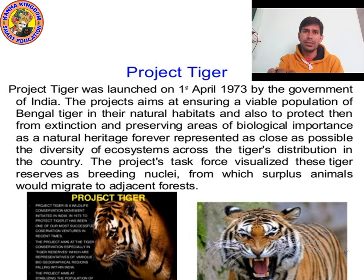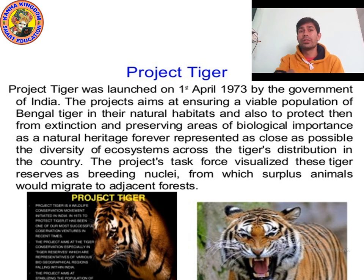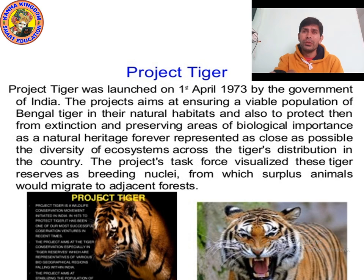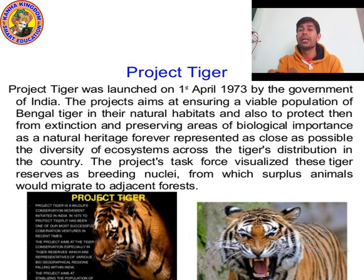We also studied about biosphere reserves. A biosphere reserve is a large area of protected land for conservation of biodiversity and the traditional life of tribals. Biodiversity means the variety of plants, animals, and microorganisms found in an area. The Pachmarhi Biosphere Reserve consists of Satpura National Park, which is the first reserve forest of India, and two wildlife sanctuaries called Bori and Pachmarhi.